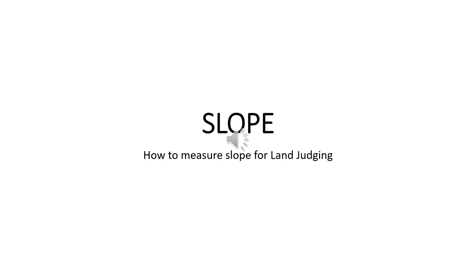We will begin with slope as the first soil property to discuss. It is an extremely important property as it affects numerous conservation measures and also is one of the five soil forming factors — in other words, how the soils were created.